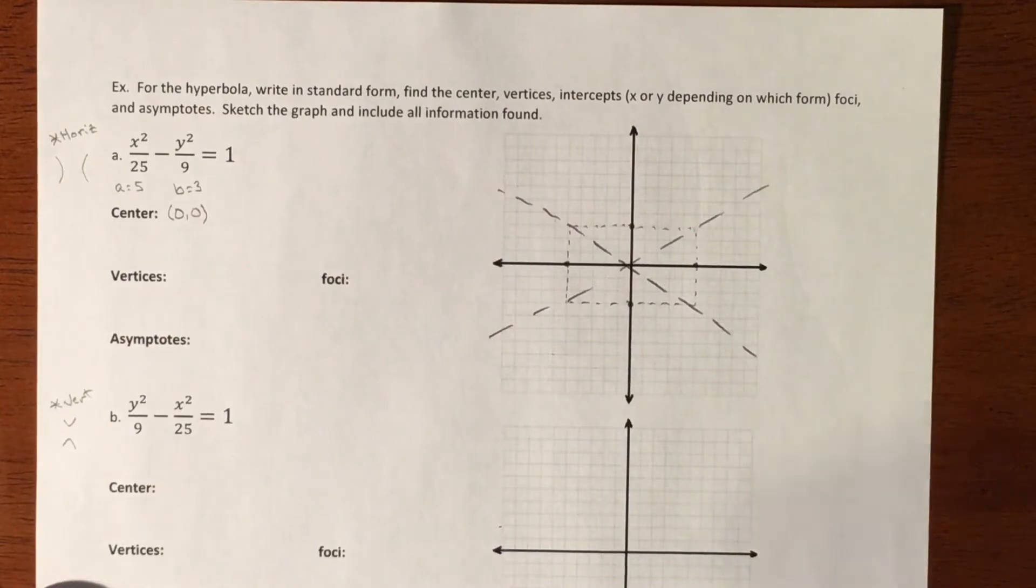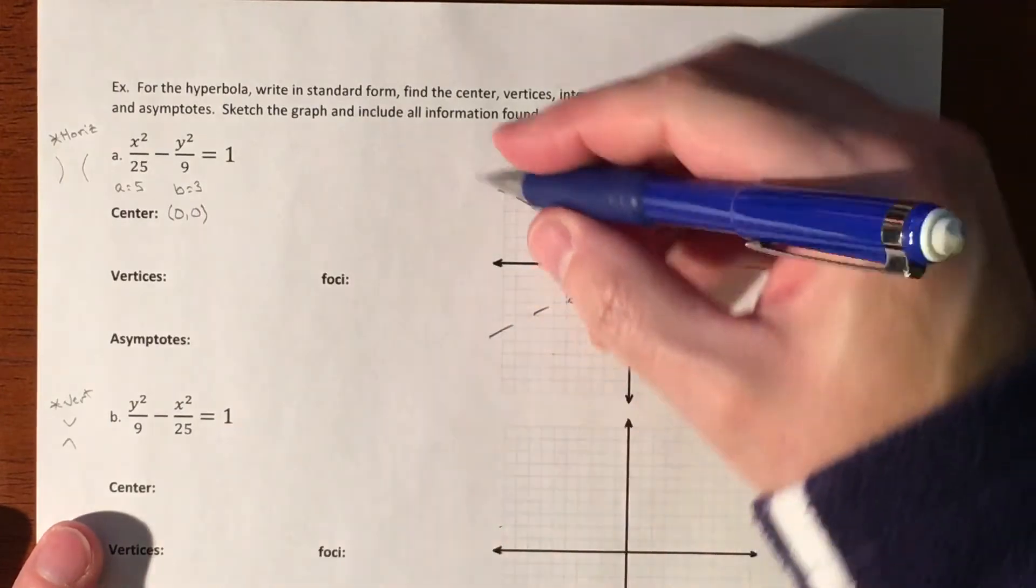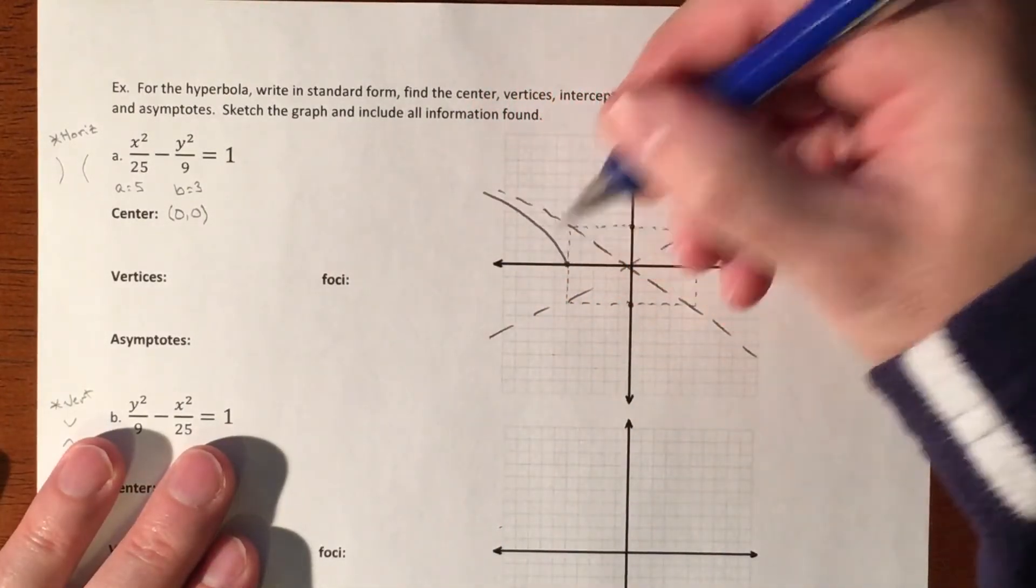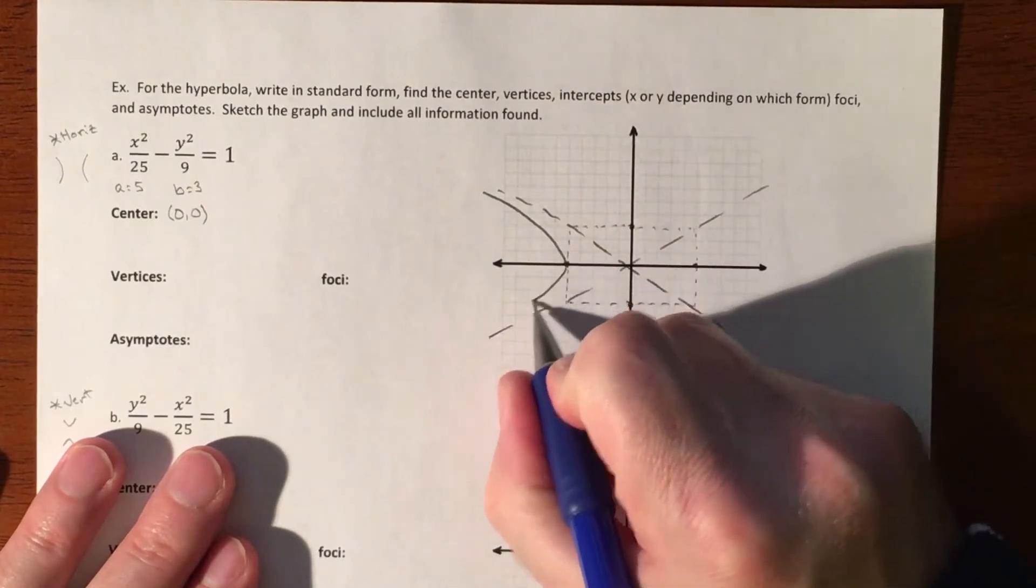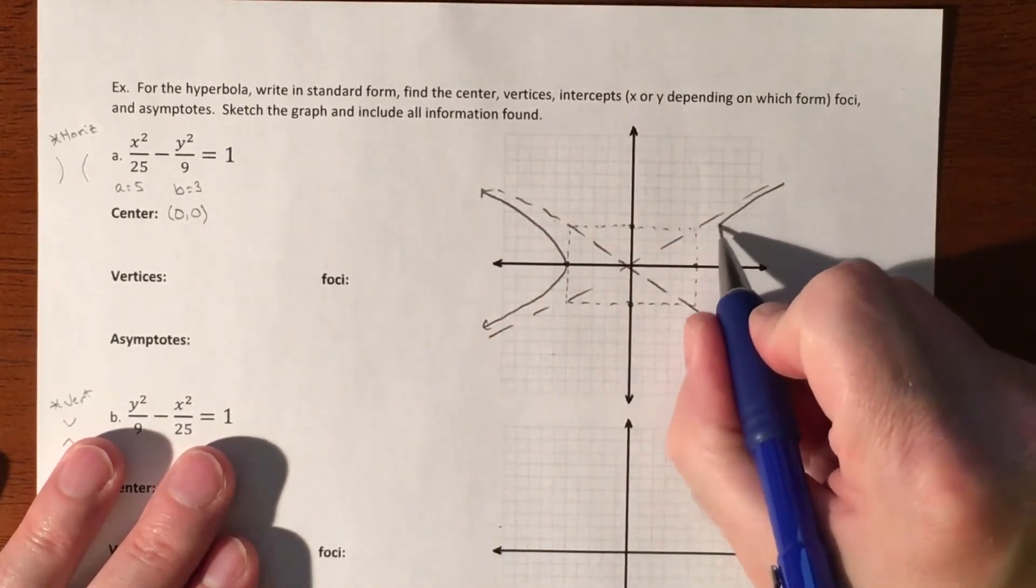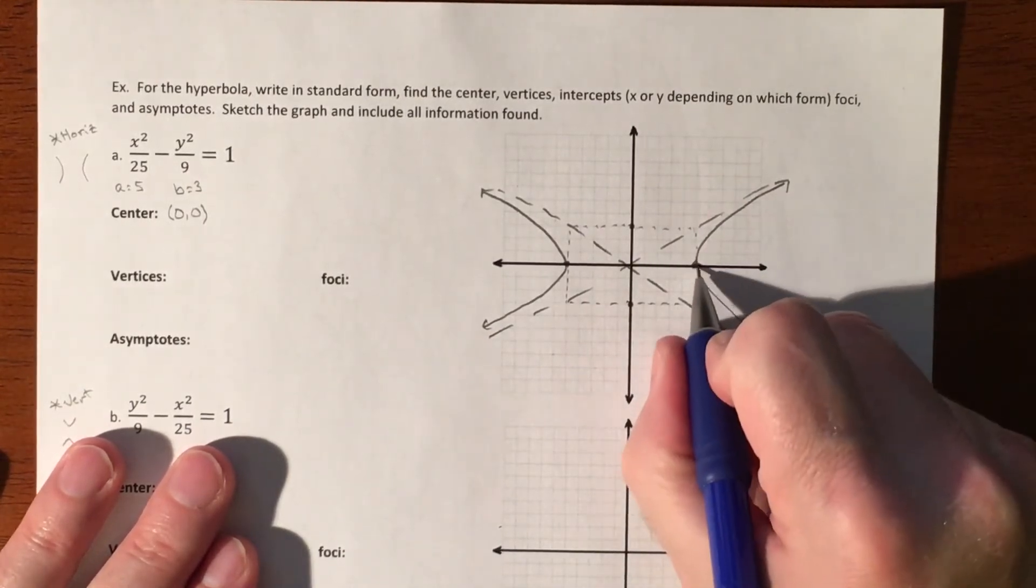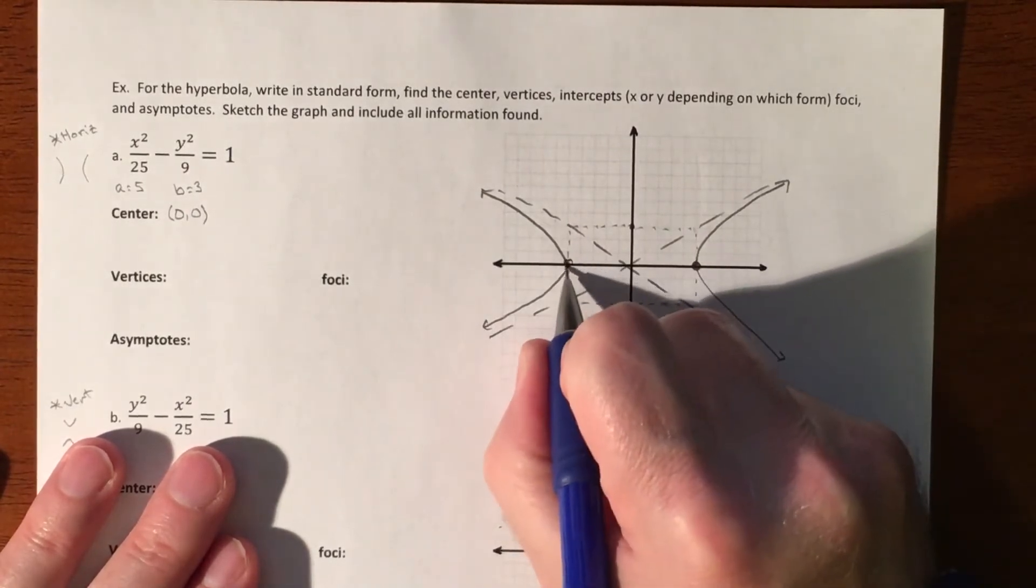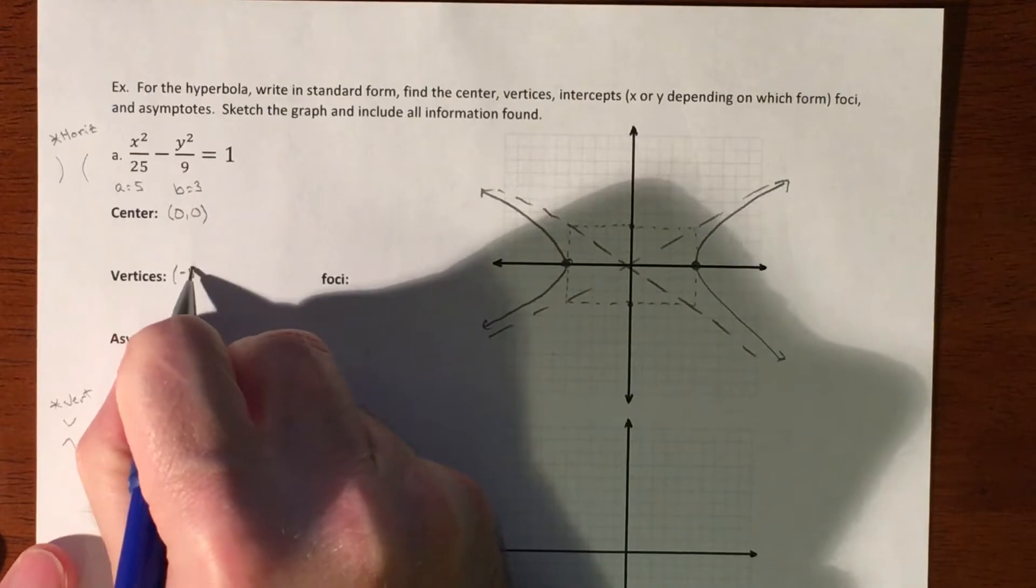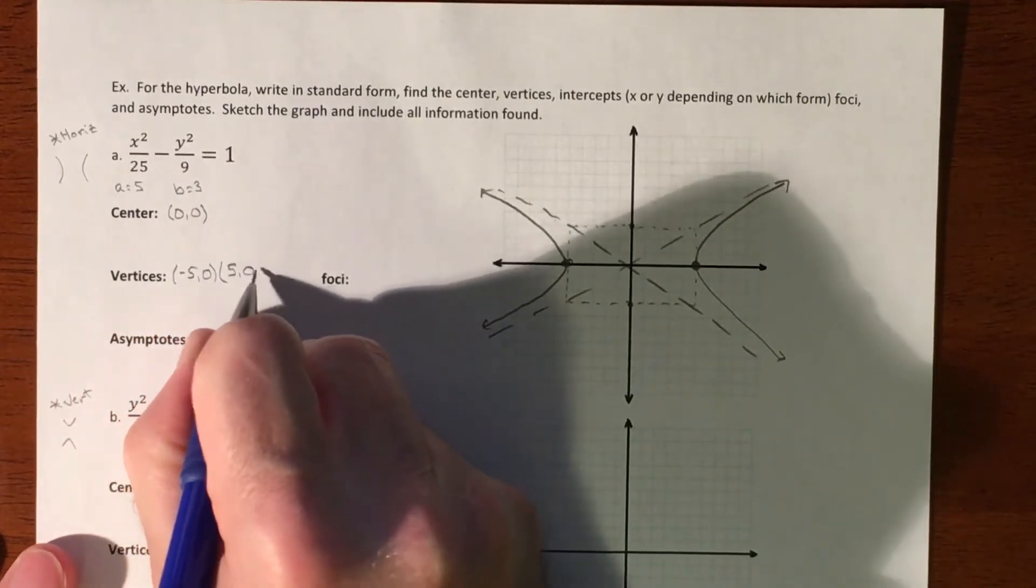All right, so since our graph is horizontal, our vertices are going to be here. So our graph is going to hug the asymptote, hit the vertice, hug the asymptote, asymptote, vertice, asymptote. So our vertices are at negative 5, 0, and 5, 0.